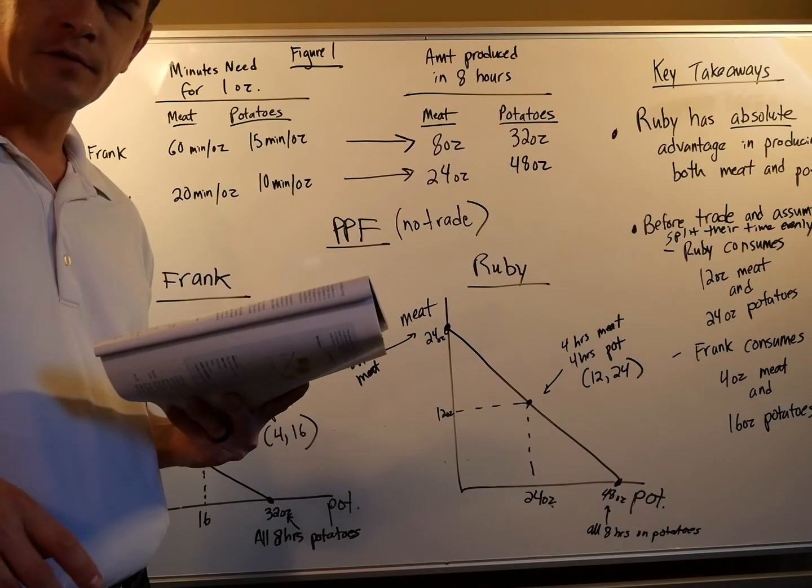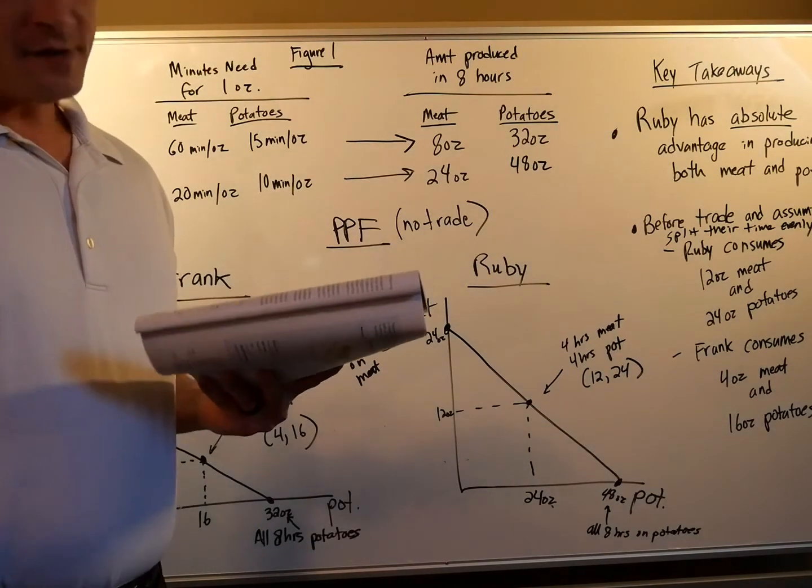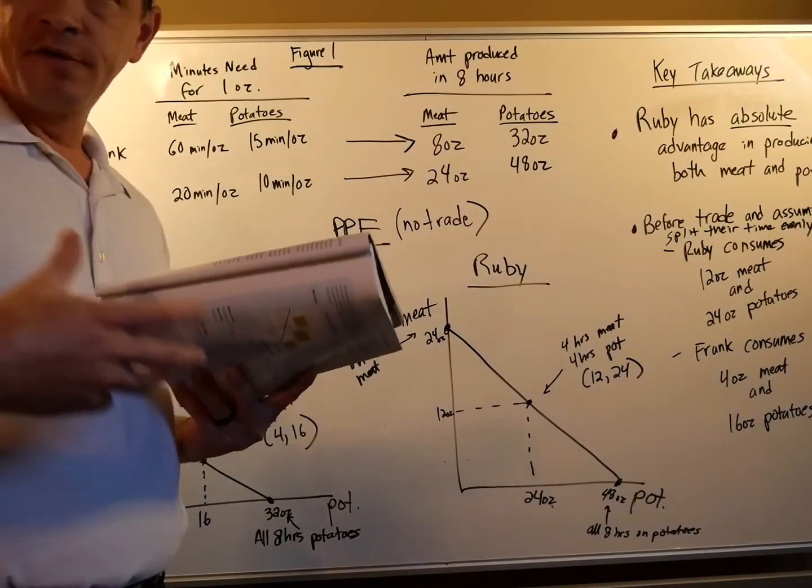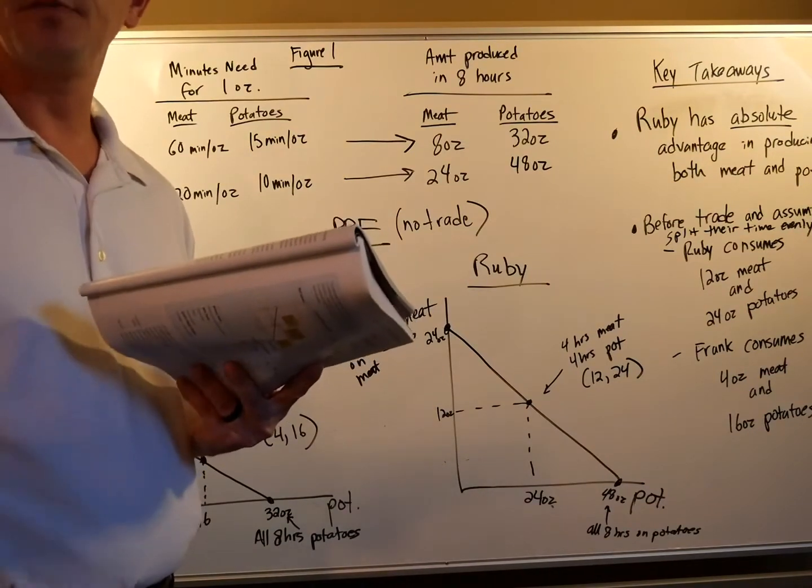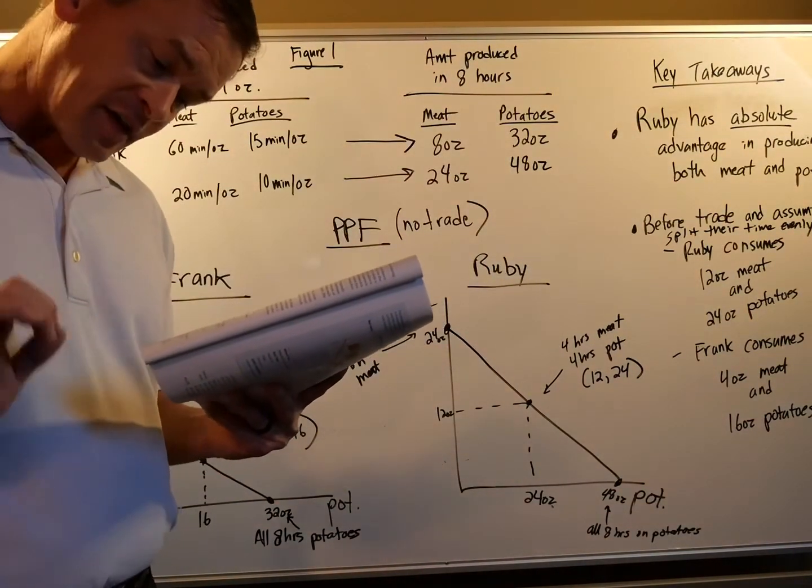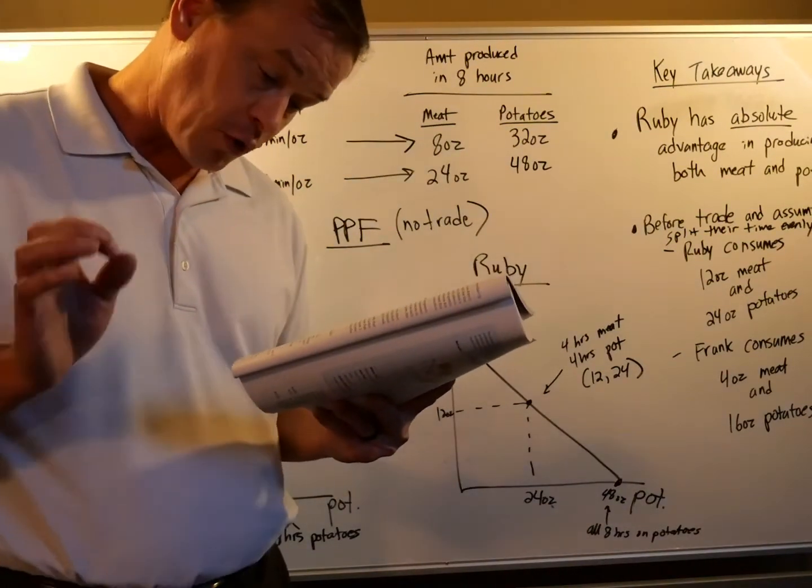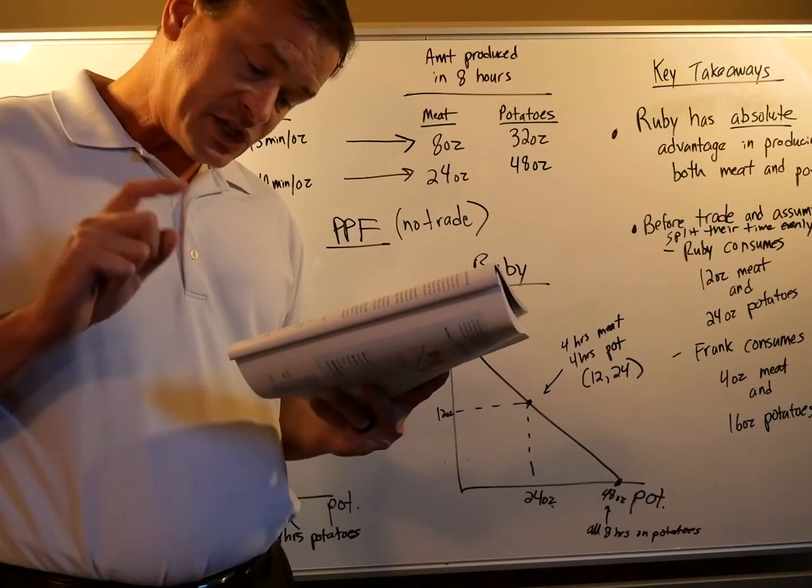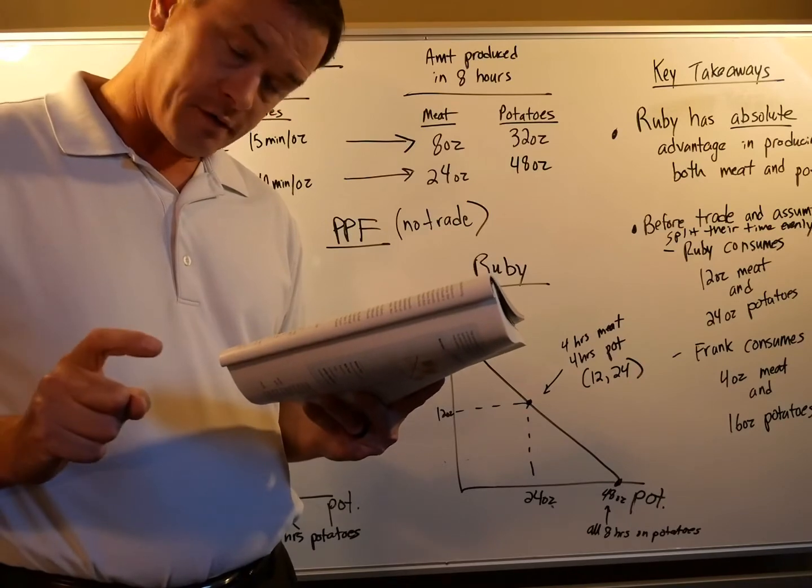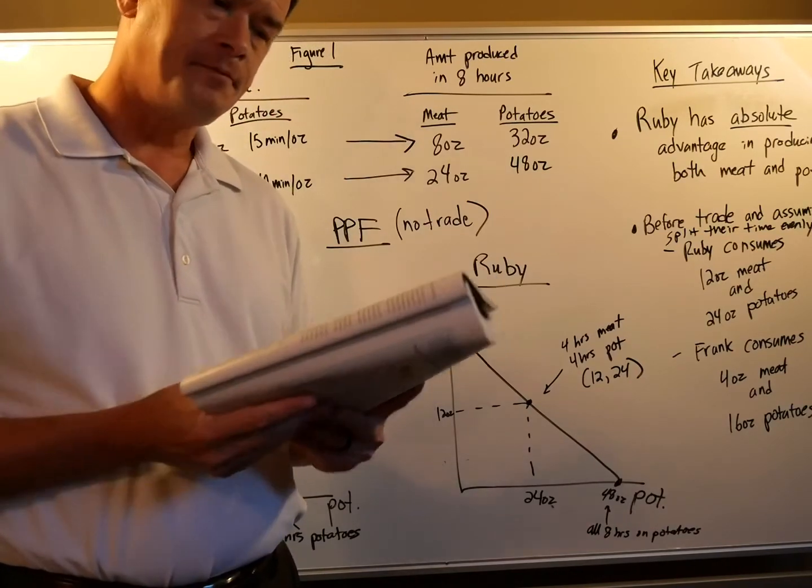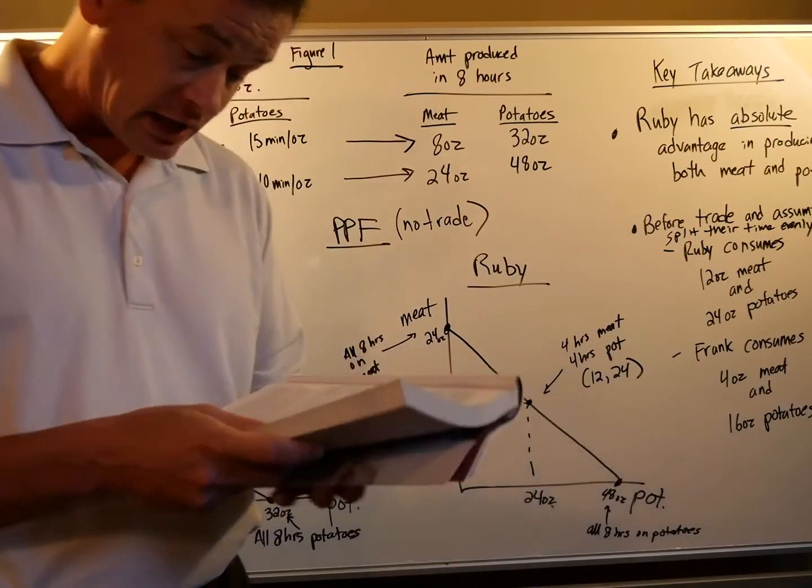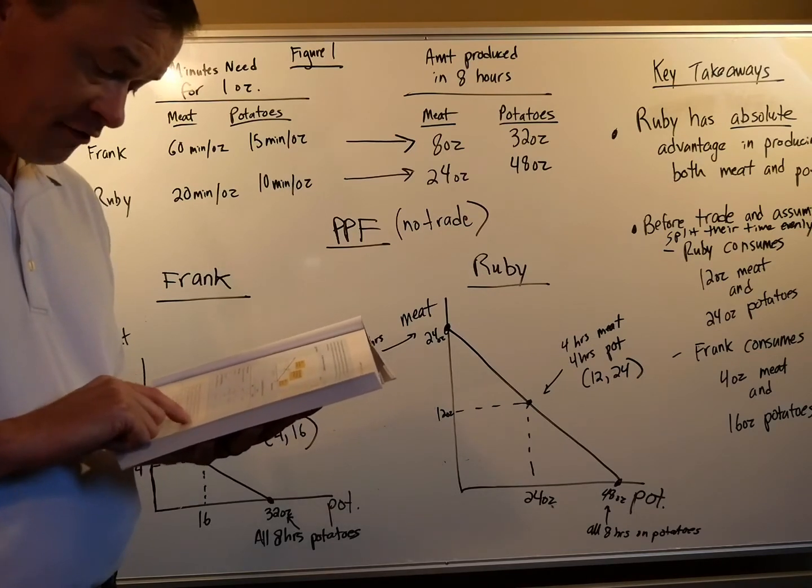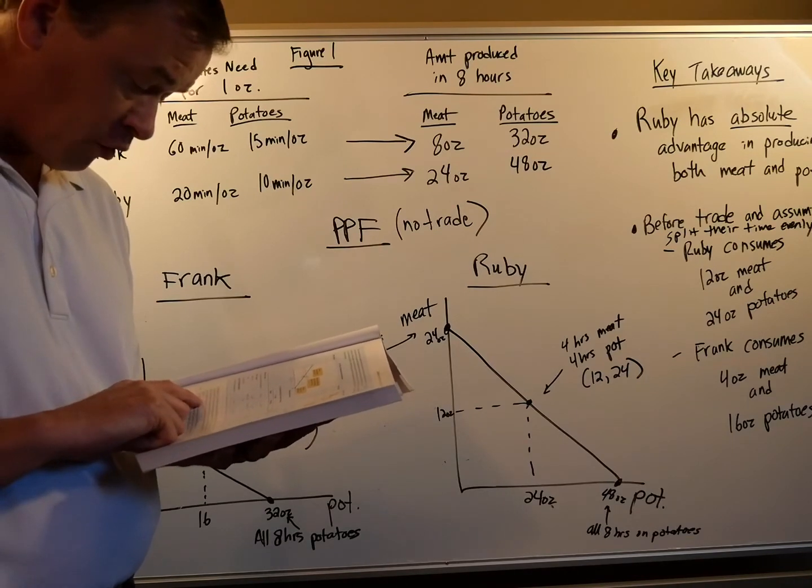Ruby says, Oh, but it is. Suppose I spend six hours a day raising cattle and two hours a day growing potatoes. So she's going to go six and two instead of four and four or eight and zero. Then if she goes six and two, she can produce 18 ounces of meat and 12 ounces of potatoes. After I give you those five ounces of meat, remember that was her trade, in exchange for 15 ounces of potatoes, I'll end up, here's her payoff, with 13 ounces of meat and 27 ounces of potatoes. That's instead of the 12 ounces of meat and 24 ounces of potatoes that I get now. So I will consume more of both foods I do now.